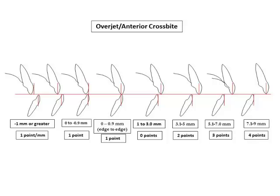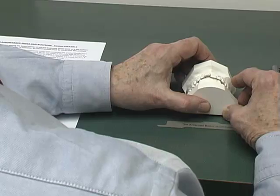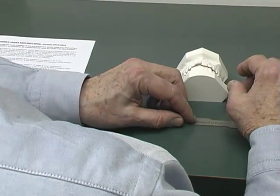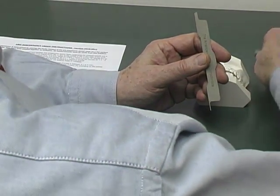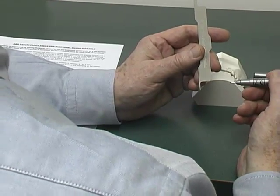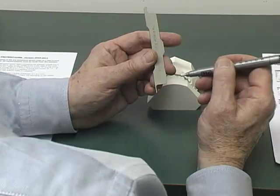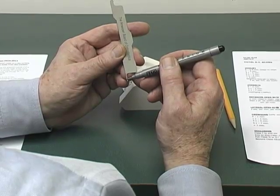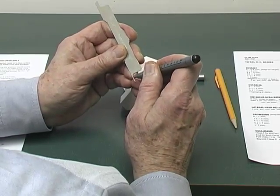I will begin with a set of casts, number 2, that are not that severe but will allow me to demonstrate measurement of a couple of categories. Before I do a DI, I will actually take the ABO measurement instrument and mark the 5 millimeter and the 10 millimeter so that I can more easily visualize the millimeter readings. I use a half millimeter black felt tip pen — naturally this isn't permanent on the metal, it will wipe off easily. So I will count 1, 2, 3, 4, 5, and mark.